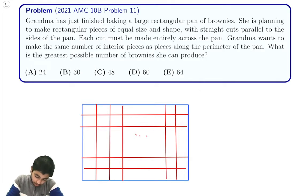Let's say the dimensions are x by y. We want to find the number of brownies that can be produced. Notice that we're given this condition: the number of pieces on the interior is the same as the pieces along the perimeter.